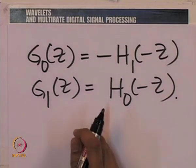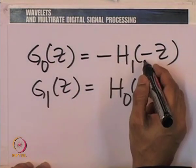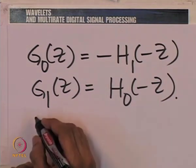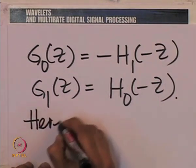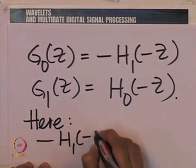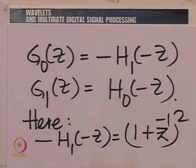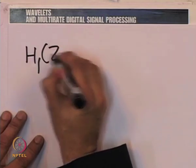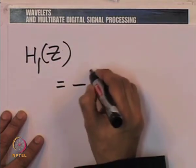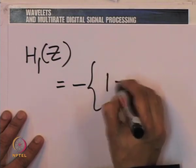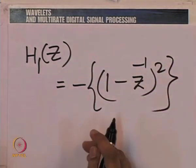Therefore, writing all equations in terms of G_0 and H_1: since minus H_1(-z) equals G_0(z) equals (1 + z^{-1})^2, we have H_1(z) equal to minus (1 - z^{-1})^2 — taking the minus sign to the other side and replacing z by -z.